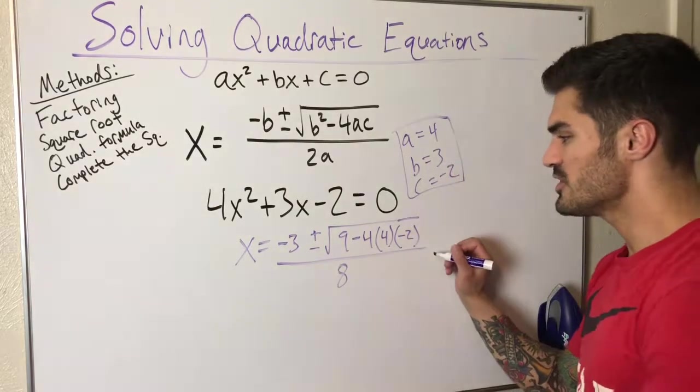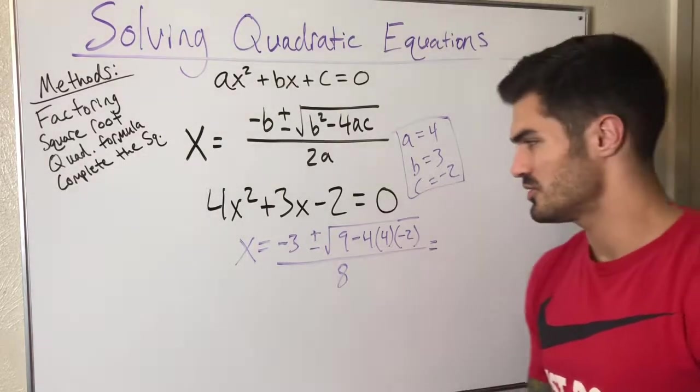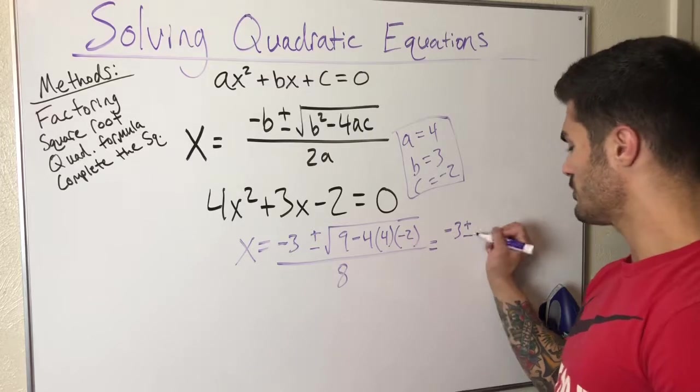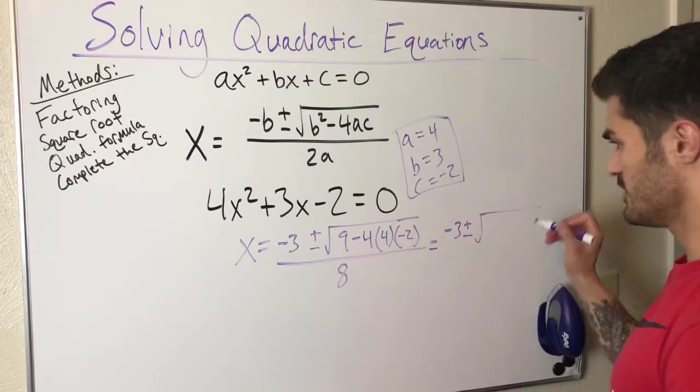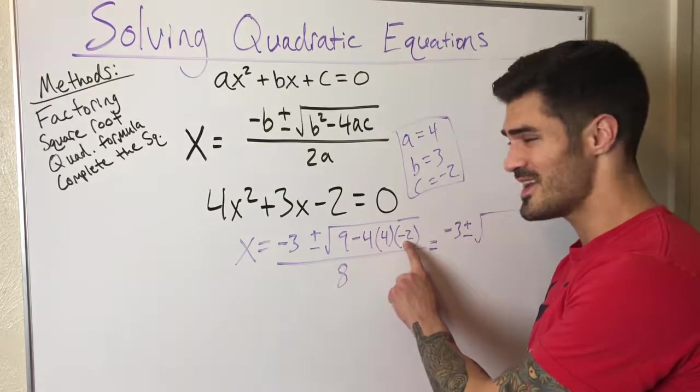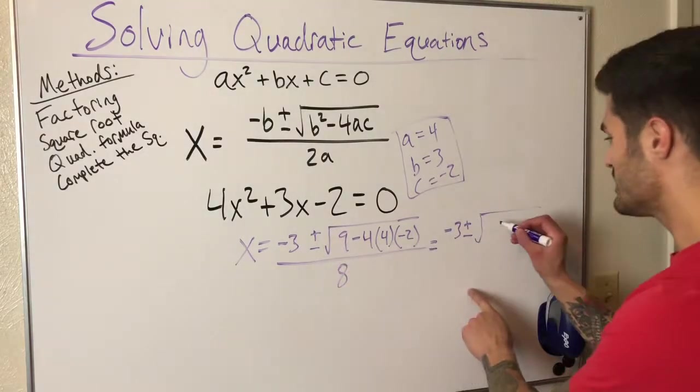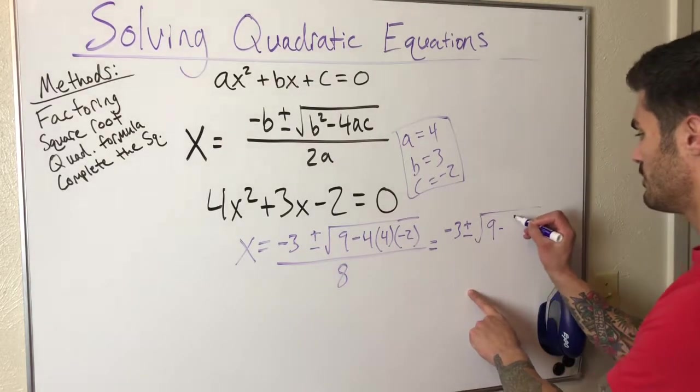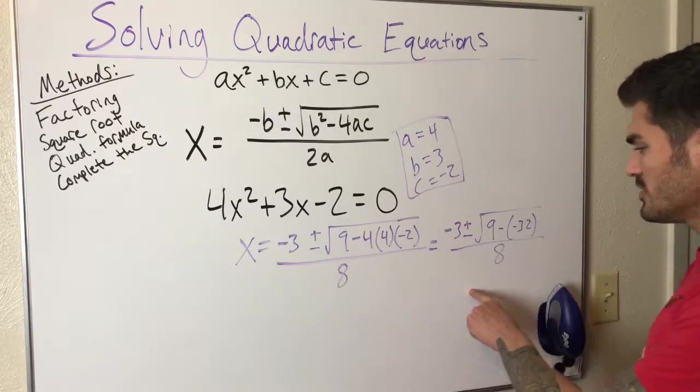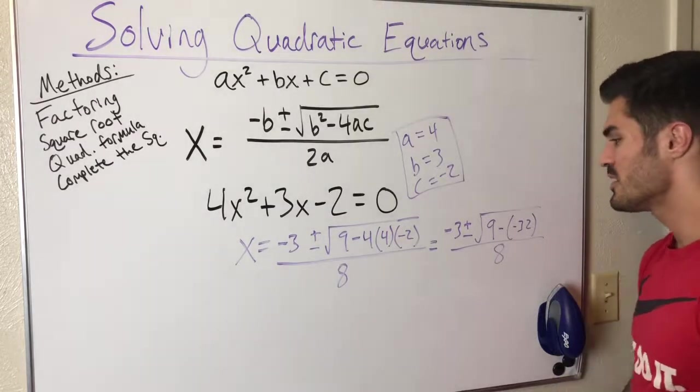I'm going to simplify what's under the root. That's the first thing I usually do. This equals negative 3 plus or minus. Let's see, I have 4 times 4 is 16 times negative 2, that's negative 32. So what I have is 9 minus negative 32. Be careful with the algebra here. All over 8.